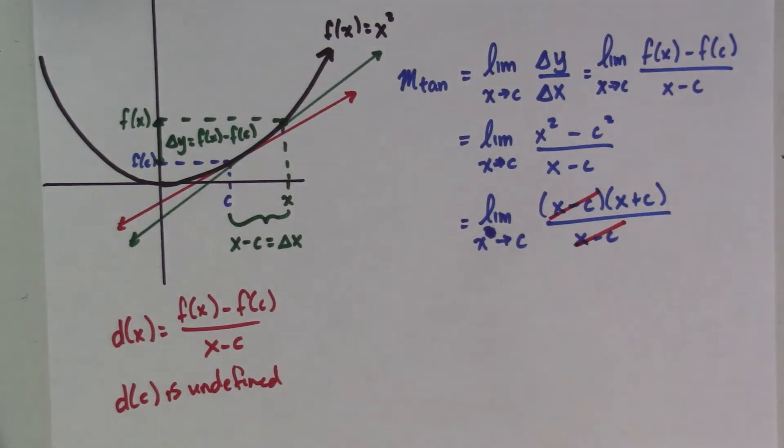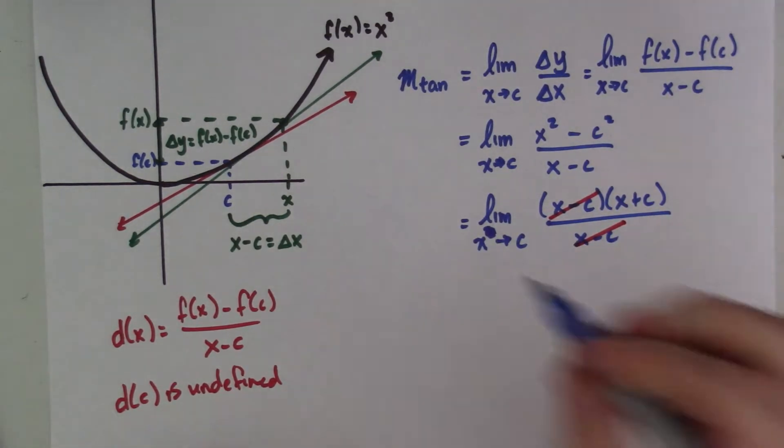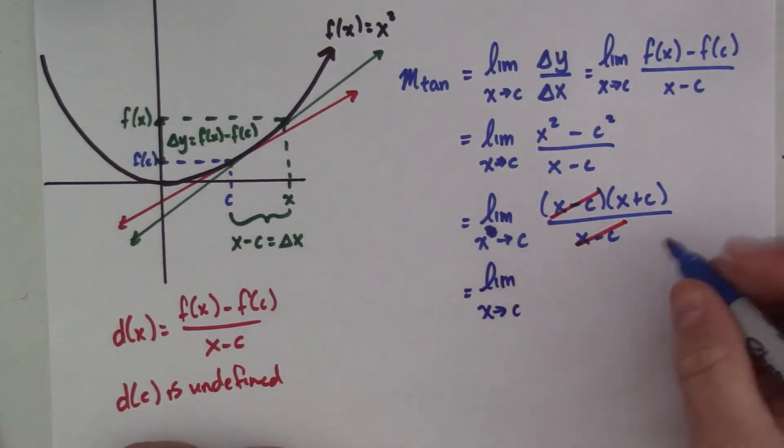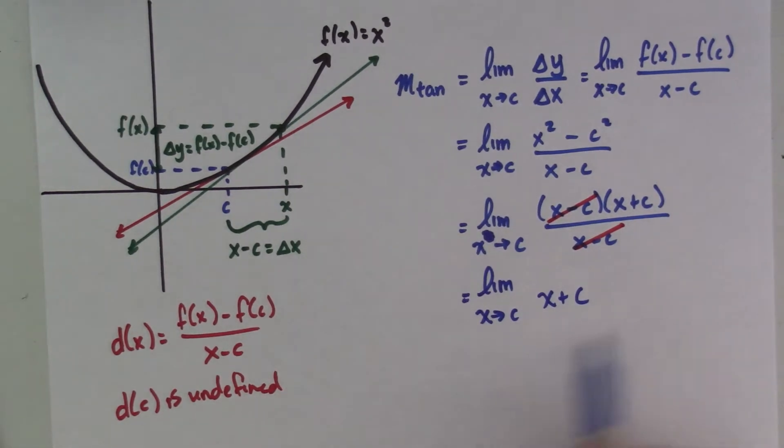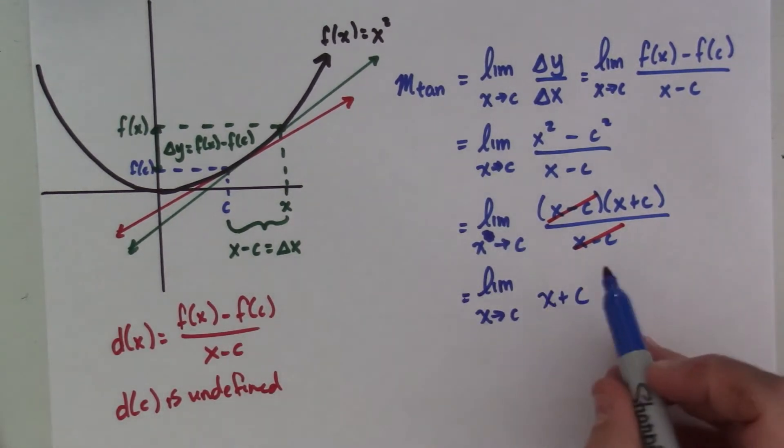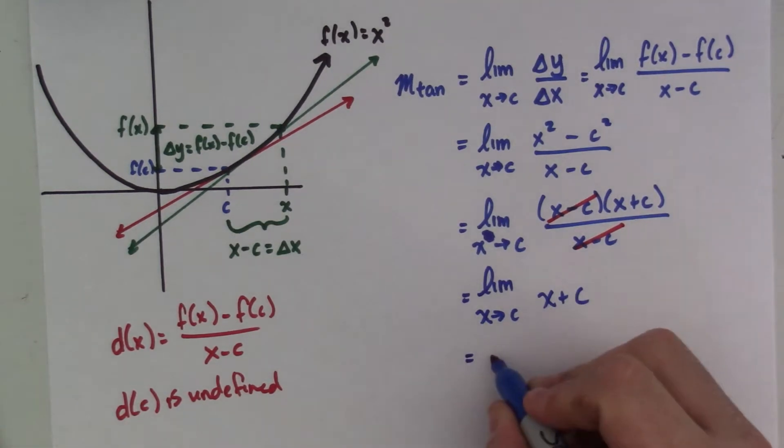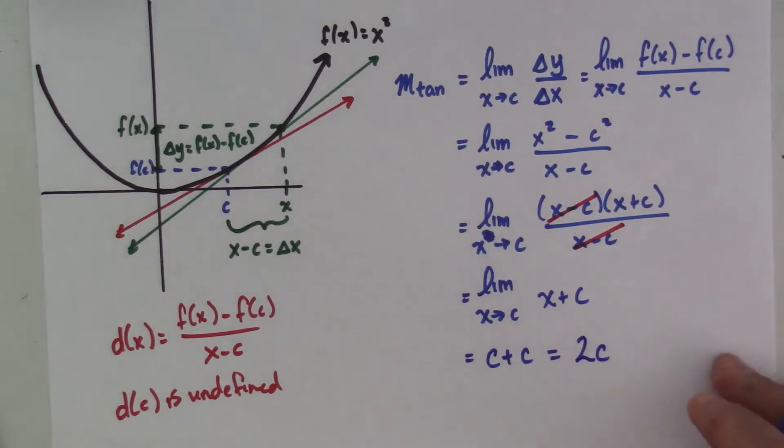Now, from here, I have no more domain restrictions. I have a polynomial, which means all I have to do is substitute for x, and that gives me c plus c, which is simply 2c.